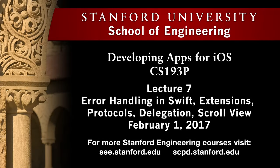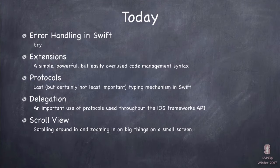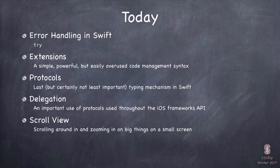Welcome to Stanford CS193P, Developing Applications for iOS, Winter of 2017. This is lecture number seven, and today we're going to talk a little bit more about Swift. Once we do that, we can introduce some technology that we need to do more sophisticated UIKit objects, like scroll view, which is going to be our first example of that today. We'll have a demo at the end where we show you how to use scroll view.